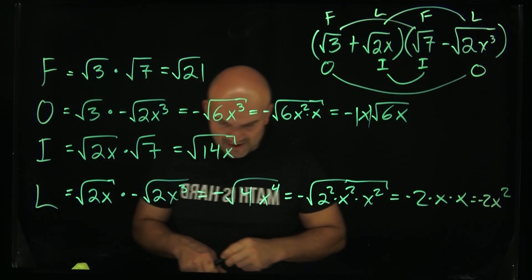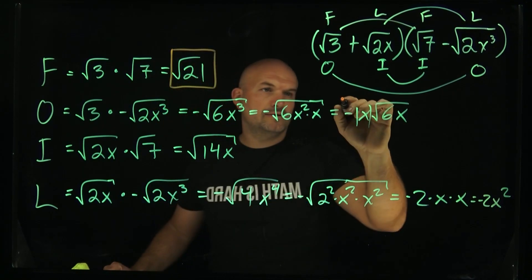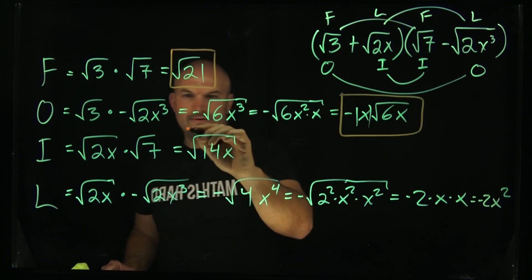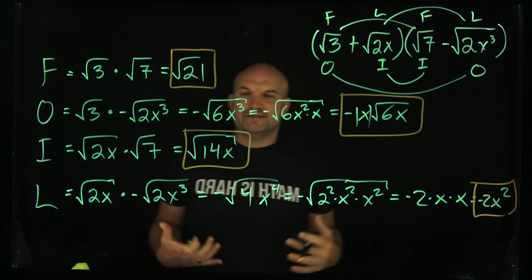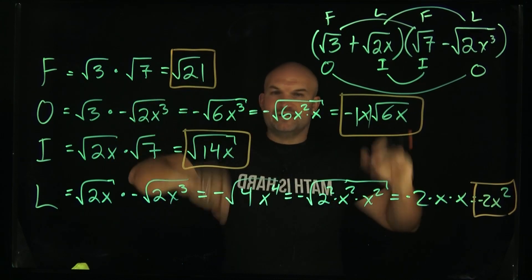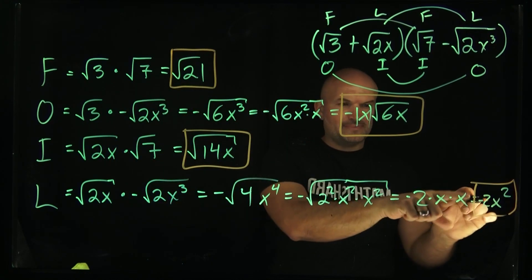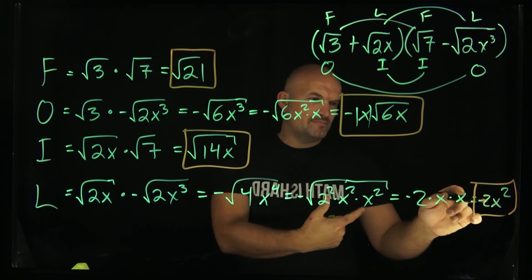The thing I like about this method is that now we have this term, this term, this term, and this term. What we want to see is, are any of these exactly the same? Do they all have the same index, which they all do? Well, this one's squared, so you don't need the absolute value in that case, since it's already presumed positive.